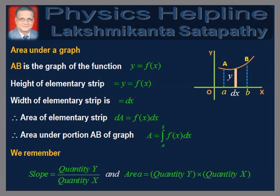Now we understand the area under a graph. Consider the graph of the function y = f(x) as shown in the figure. Consider a narrow vertical strip of width dx. Therefore, area of the strip dA = y·dx = f(x)·dx. The area under the graph between x = a and x = b can be obtained by integration. Therefore, area A = ∫f(x)dx from a to b. For easy recall, the slope is the quotient of the quantities along the y-axis and x-axis, and area is the product of these two quantities.